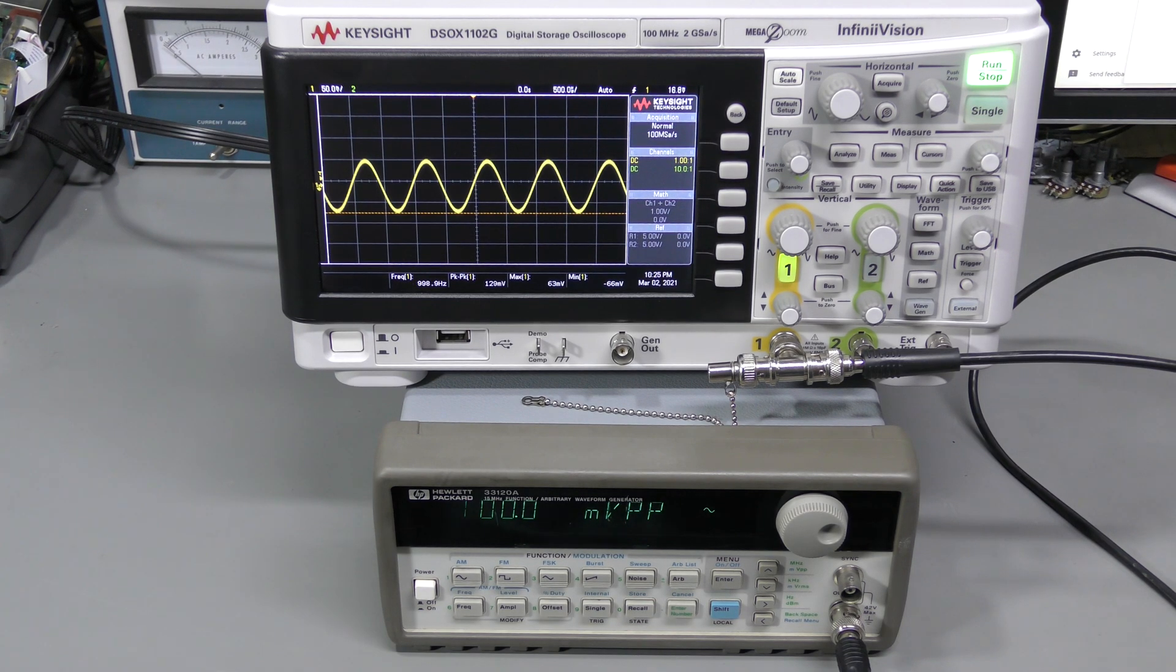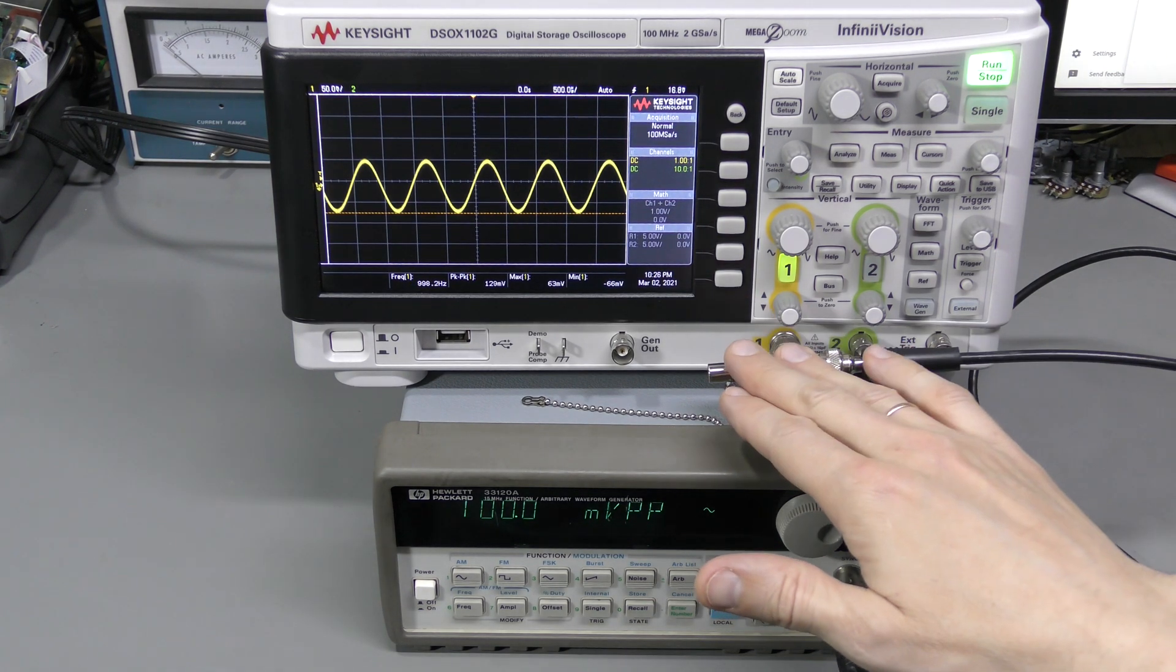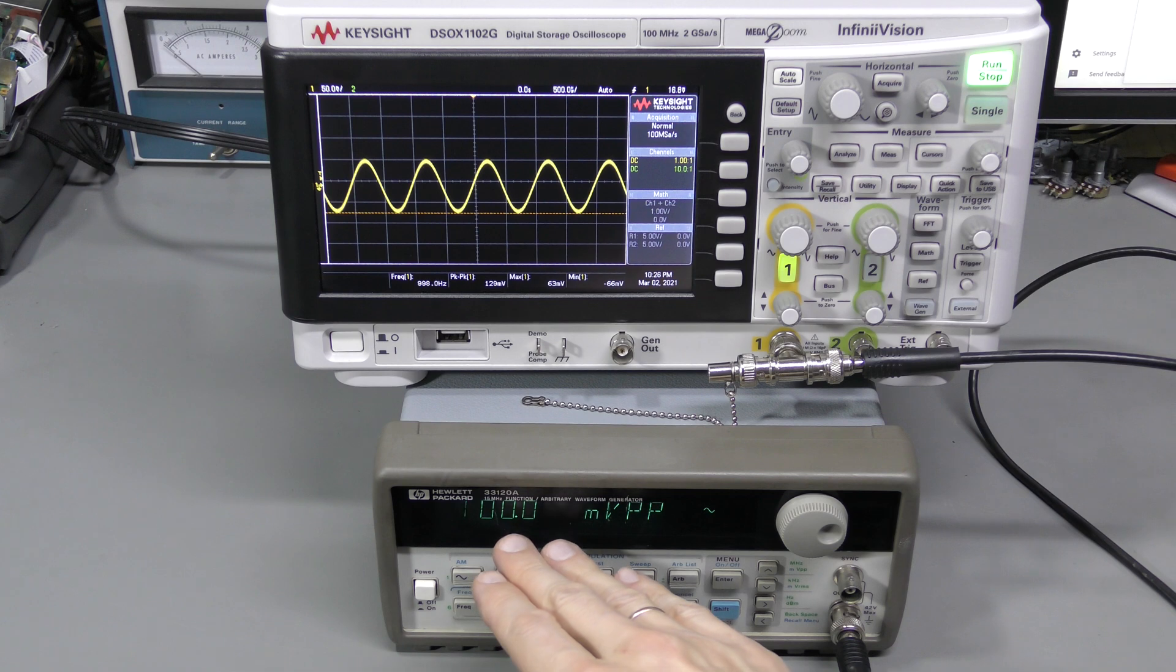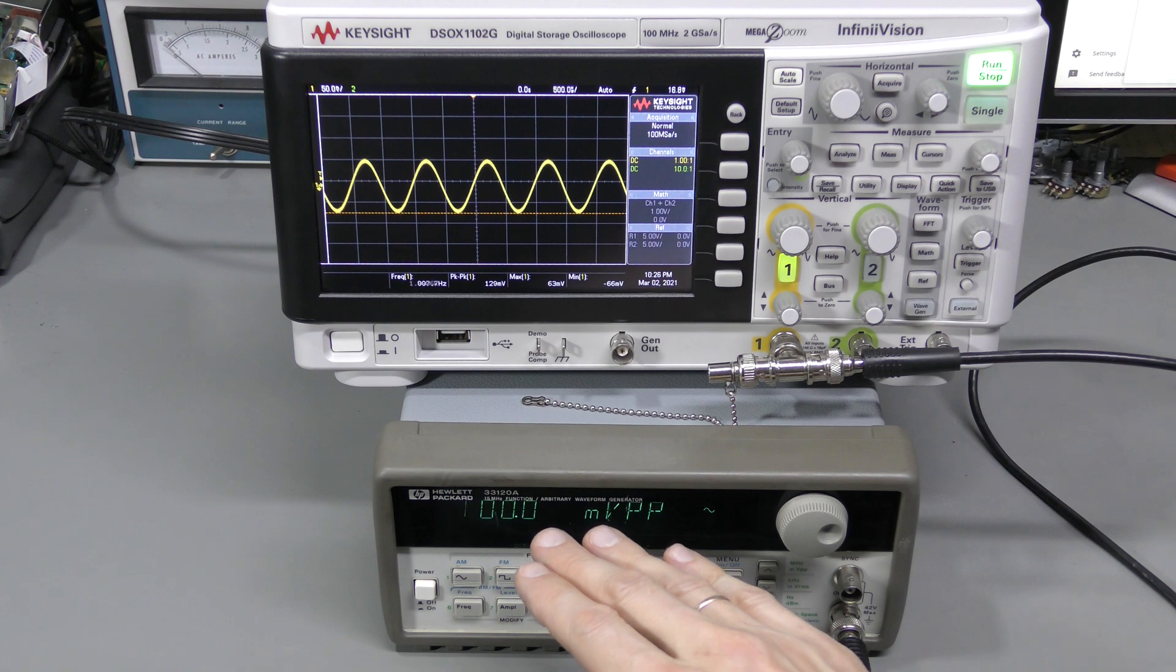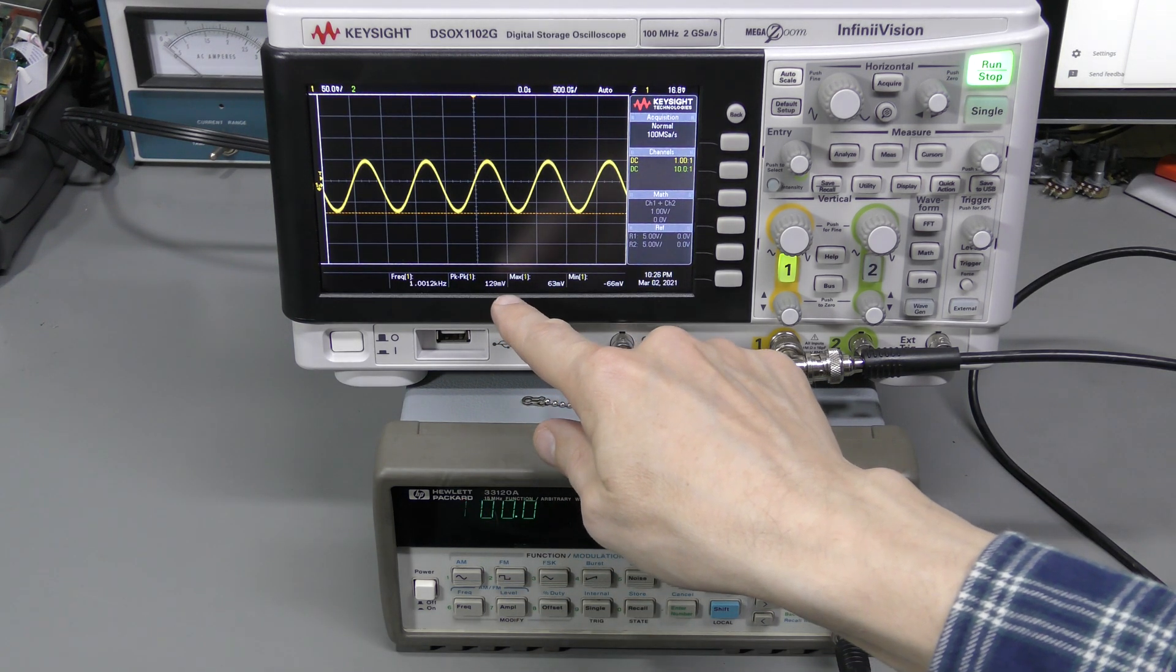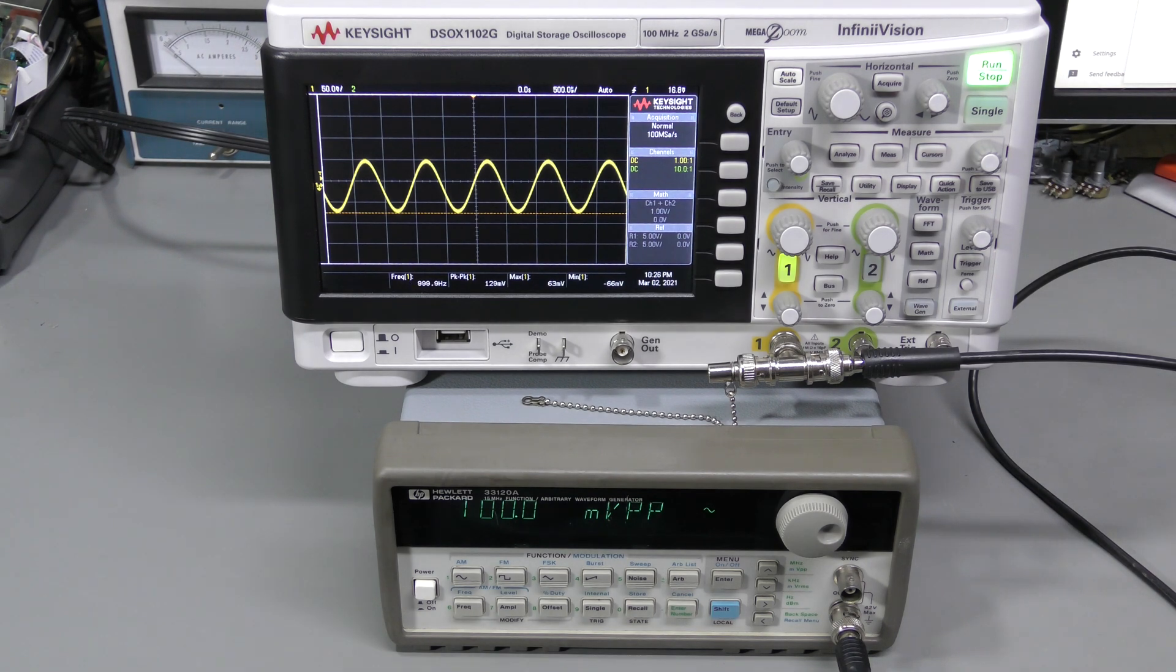Here it is, hooked up to a scope with 50 ohm termination and a 1 to 1 probe set here. On the generator we have 1kHz 100mV peak-to-peak signal, which is the default. We measure about 120 or 130mV at the moment. I believe I have seen about 100mV output before, but now it is not 100. And it's all over the shop.